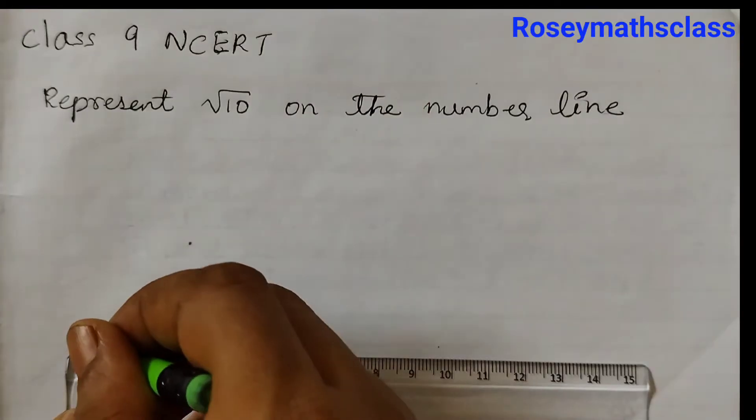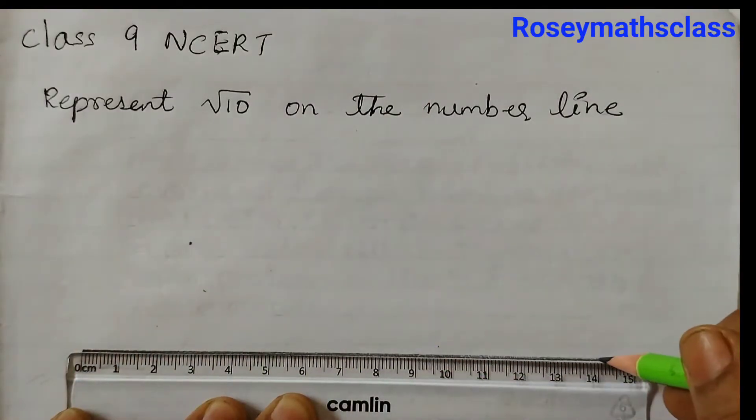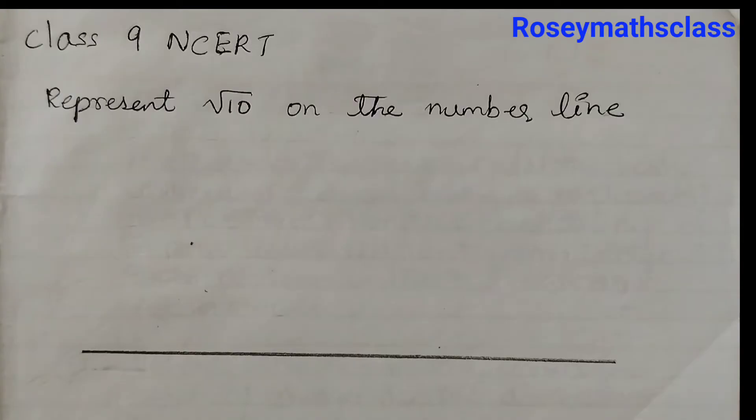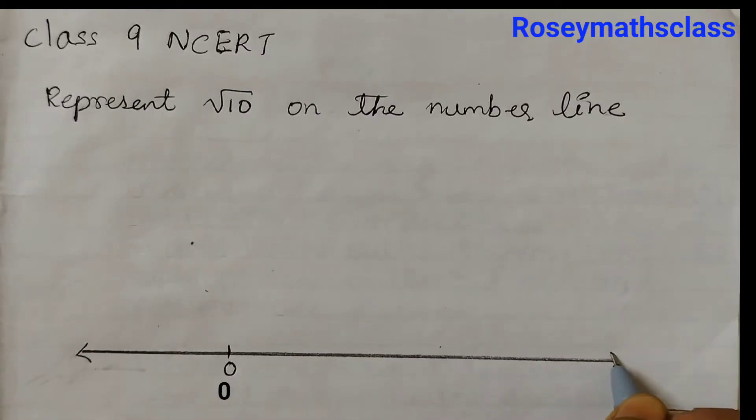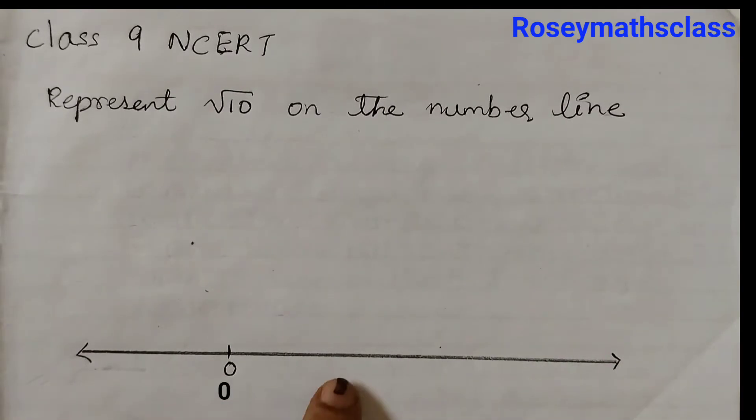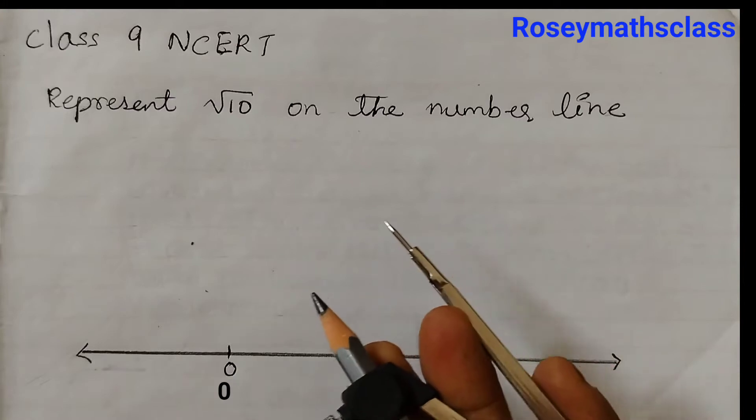First draw a number line, just draw a straight line like this using a scale, and then mark a point O representing 0. So let's say this is 0, and put arrows here. Take a point A on the number line such that OA is equal to 4 units.